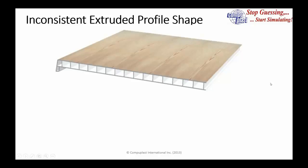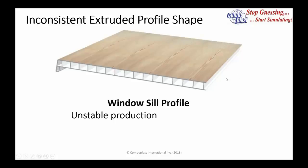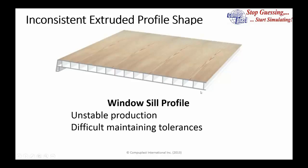The next example is an extruded profile shape — essentially a windowsill profile extrusion. When they were producing this profile, they found relatively unstable production. The consistency of the walls was not very good, varying slightly from day to day. Therefore they had difficulty maintaining the required tolerances on the part. As a result, they had to run relatively slowly with a low production rate, so they weren't as efficient as they could be.